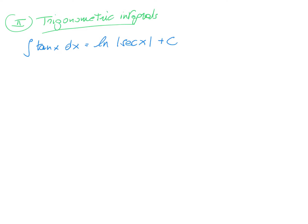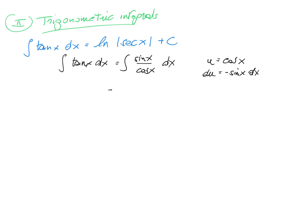Why is this? The integral of tangent x dx — tangent is sine of x divided by cosine of x dx. We do a substitution: set u equal to cosine of x, which means du is minus sine of x dx. Plugging in, this is minus the integral of du divided by u, which is ln of u. So, minus ln of the absolute value of u plus a constant. Transforming back, this is minus ln of the absolute value of cosine of x plus a constant.